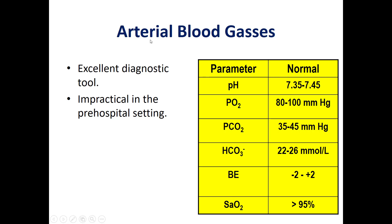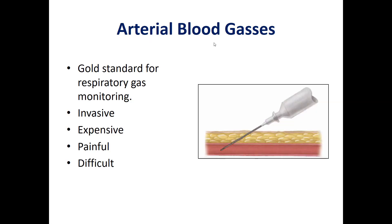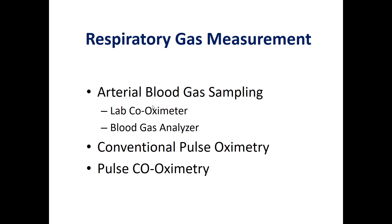This is called arterial blood gases. In order to measure these arterial blood gases, the gold standard is to take a blood sample, which is invasive, expensive, painful, and difficult. The machines used to measure arterial blood gases include the lab co-oximeter we discussed in the previous slide.